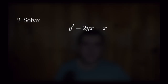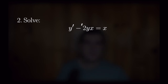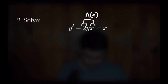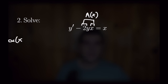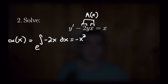For number two, we are going to solve the following differential equation: y prime minus 2yx is equal to x. Hopefully you can easily identify that this is a first order linear differential equation. With that in mind, we can identify our a of x to begin our general solution process. For this particular equation, the role of a of x is played by minus 2x. Recalling our definition, alpha of x is the exponential of the integral of a of x dx. So alpha of x is equal to e to the power of the integral of minus 2x dx. The antiderivative of negative 2x is negative x squared, so our integrating factor is e to the power of negative x squared.